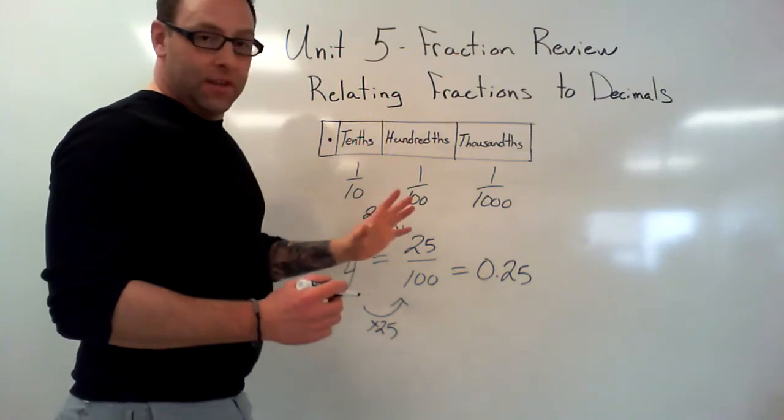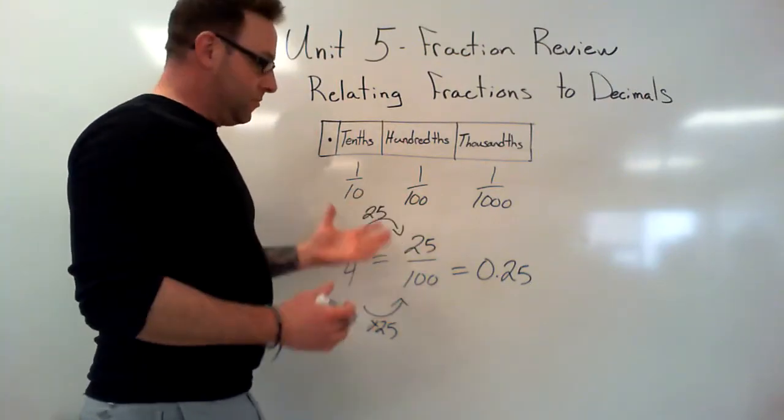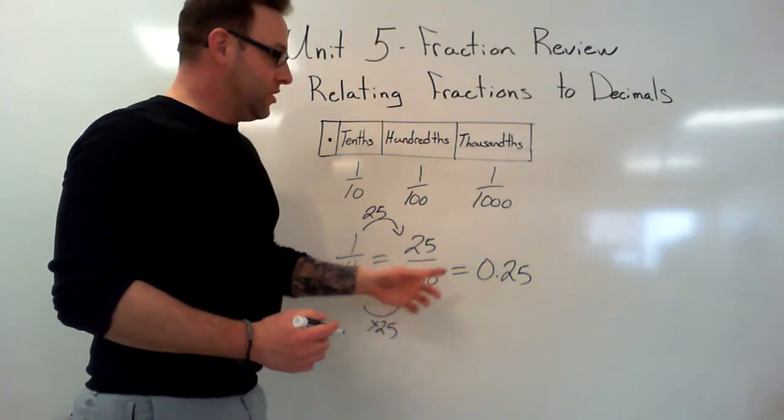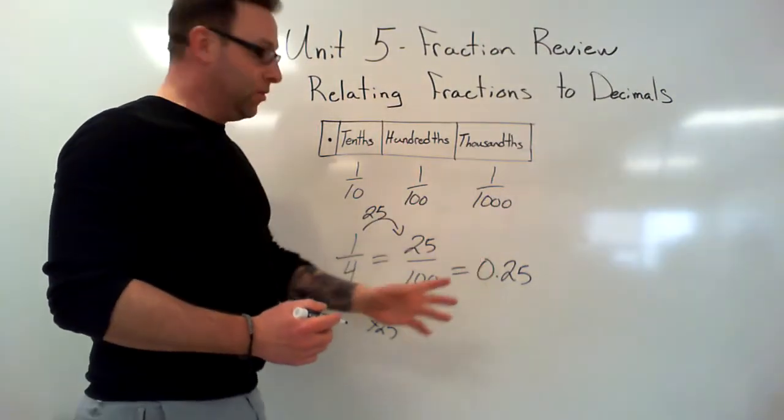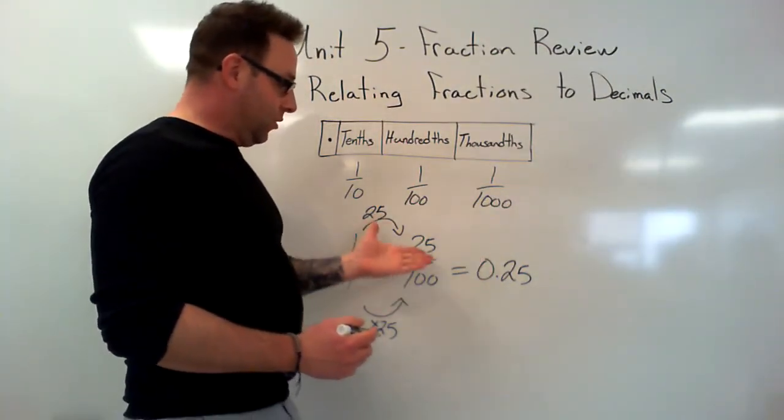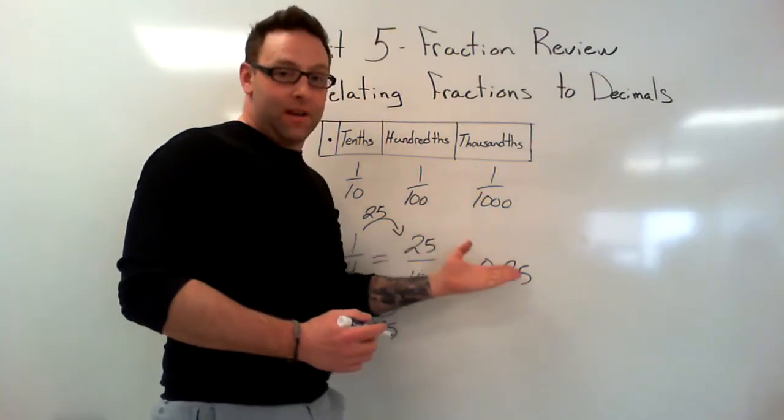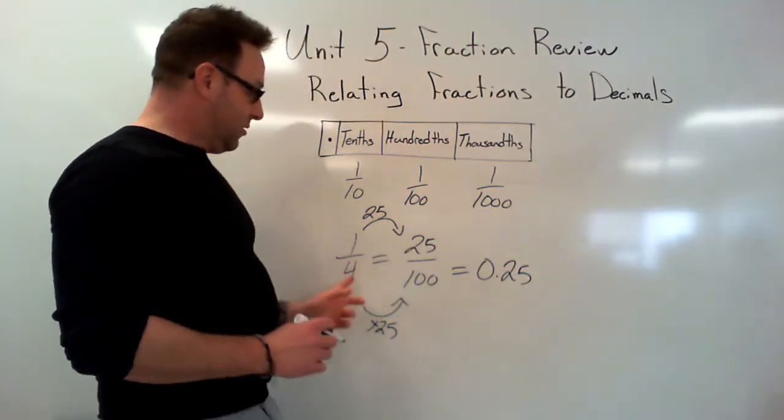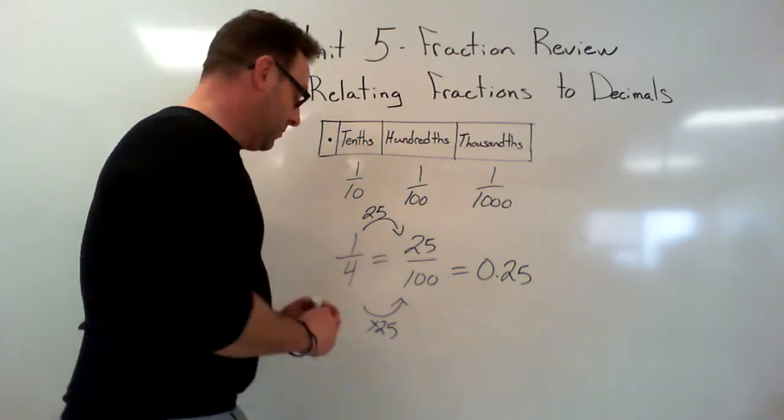The other thing that we want to talk about is equivalent fractions and decimals. All that means is what fraction and what decimal are equal. The example is right here: 25 over 100 is the same as 0.25, which is also the same as 1 over 4.